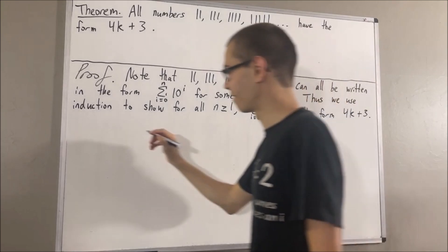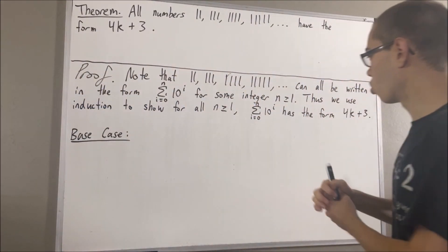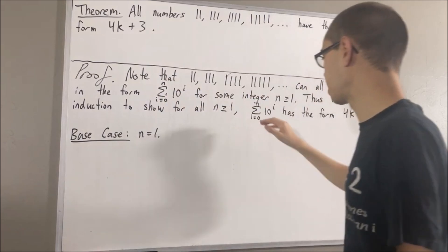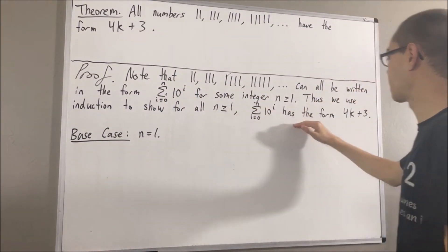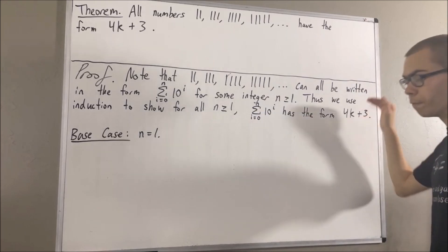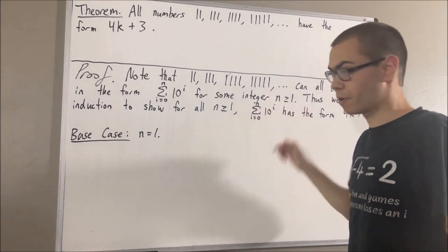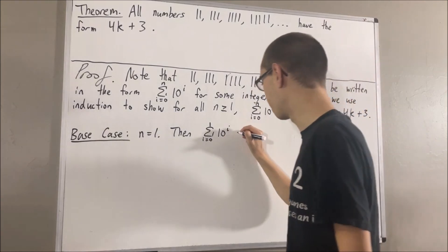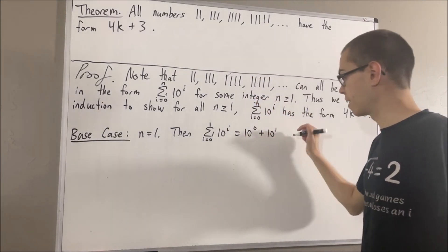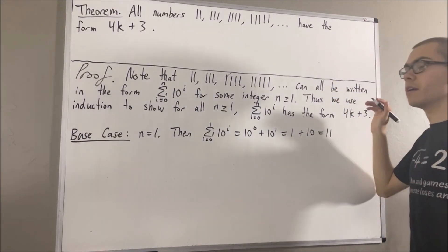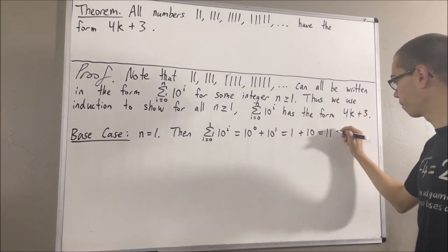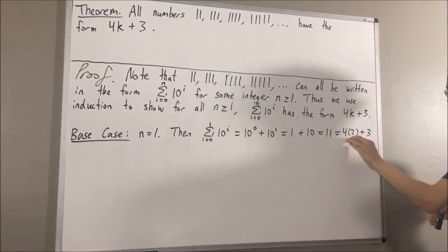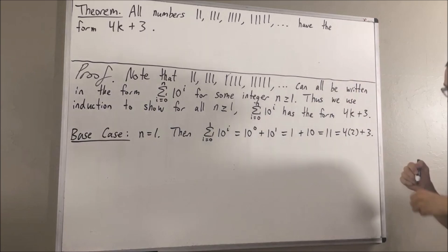Let's start with the base case. In the base case, we're trying to show that this is true when n is equal to 1. So we're trying to show that the sum from i equals 0 to 1 of 10 to the power of i has the form 4k plus 3. If we write it out, this is equal to 10 to the power of 0 plus 10 to the power of 1, which is 1 plus 10, which equals 11. And 11 is equal to 4 times 2 plus 3. So the sum from i equals 0 to 1 of 10 to the power of i has the form 4k plus 3. This completes the base case.